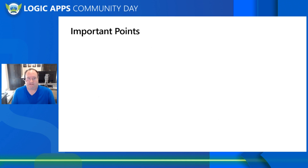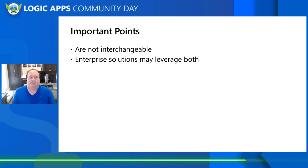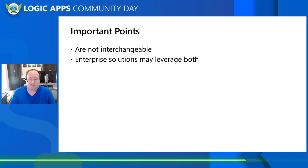Let's talk about a few important points. First off, they're not interchangeable. If you build a standard edition Logic App, you cannot simply deploy that in consumption and expect it to work — there are configuration changes that will be needed. Enterprise solutions may leverage both. You may have Logic Apps that only run a few times a month and want them in consumption, and others that are more resource intensive and thus you want to create them as a standard version.